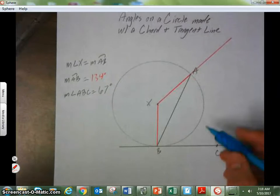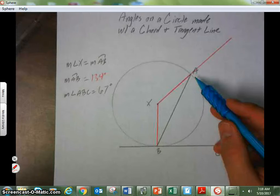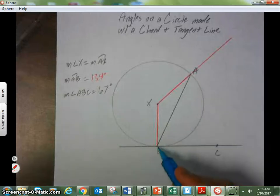Or, conversely, we can say that the measurement of the arc is twice the measurement of an angle formed between a chord and a tangent line.